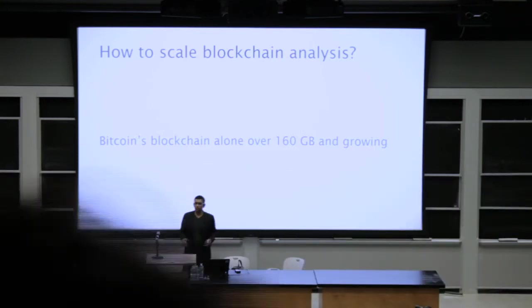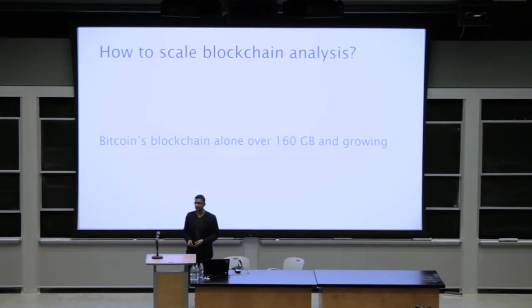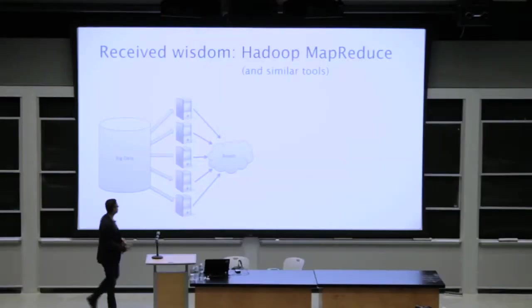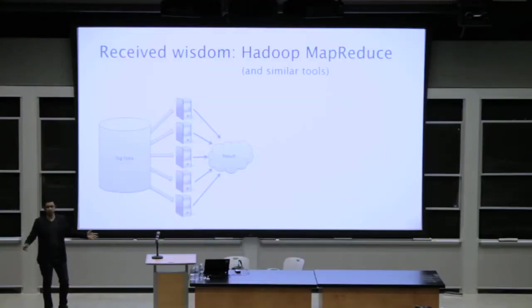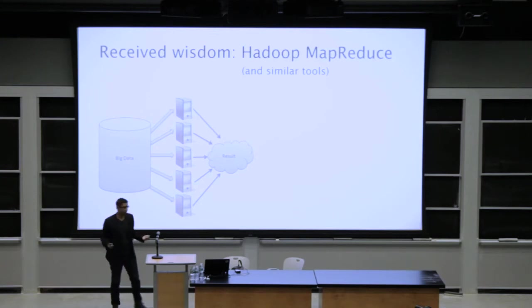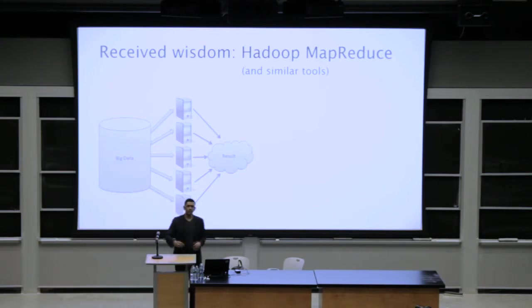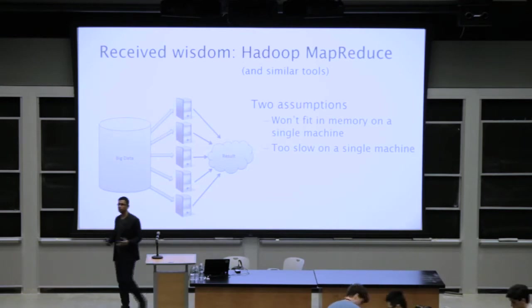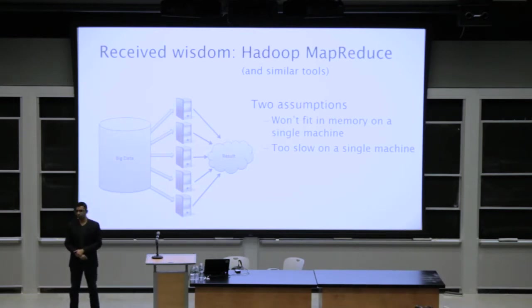There is a kind of received wisdom in the technology industry: the traditional way to solve a big data problem is to use parallel processing infrastructure — for example, Hadoop MapReduce — where you partition your data across a number of different nodes, do the processing in parallel, combine the results, and get your answer back. People use parallel processing because of two assumptions: the data won't fit in memory on a single machine, and performance on a single machine will be too slow.